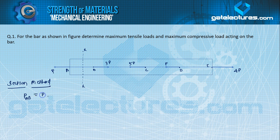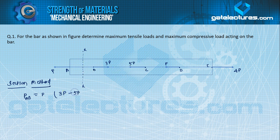So you can write P here. Now checking from the right hand side: 3P is positive, 5P towards left is minus 5P, this P is also minus, and this load 4P is positive. The total value: 4 plus 3 minus 5 minus 1 equals P. So you can see that right hand side and left hand side give equal forces. Therefore P_AB is equal to P.